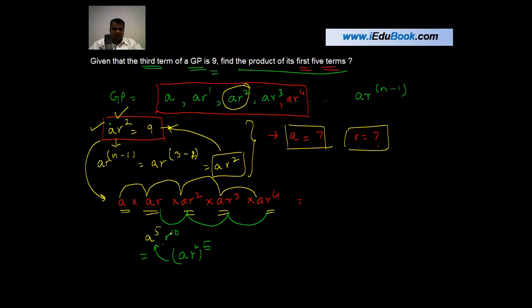Both these powers are multiples of 5, so I just take 5 as the whole power. And I just write inside as AR^2, because AR^2 to the power 5 is also equal to A to the power 5 R to the power 10.